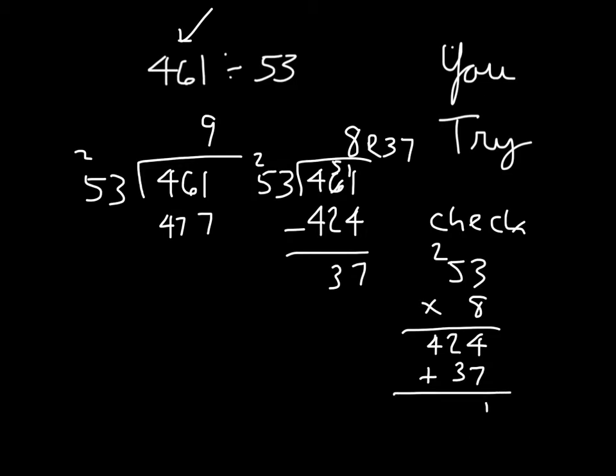7 plus 4 is 11. 1, regroup the 1. 1 plus 2 is 3, plus 3 is 6. And then we have a 4 there, 461, which matches. So our answer is 8 with a remainder of 37.